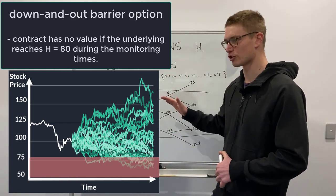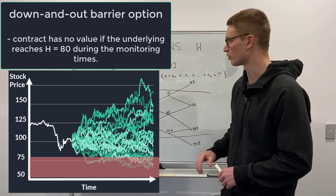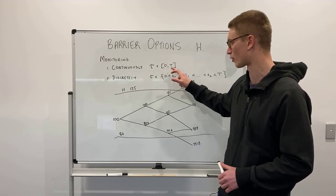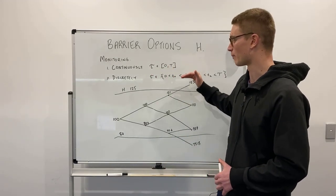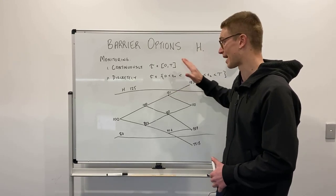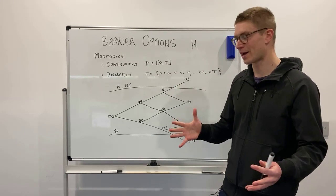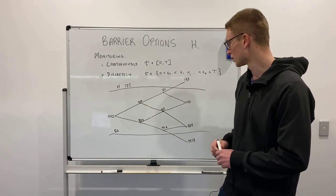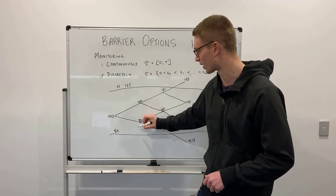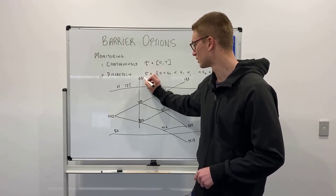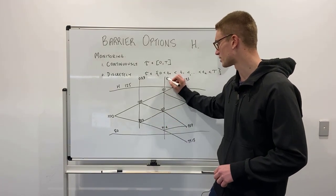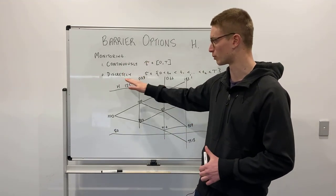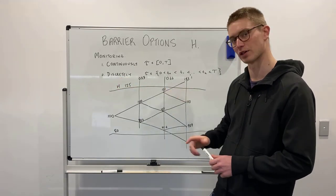So what exactly is it? Well, essentially it's pretty unique — we have two different types of monitoring times. We can either have continuously monitored, where tau is between 0 and T, meaning we're always considering where the underlying is with respect to the barrier at all time periods. Or we can have discrete time monitoring — for example, a one-year option monitored only at times 0.33, 0.66, and 1.0.